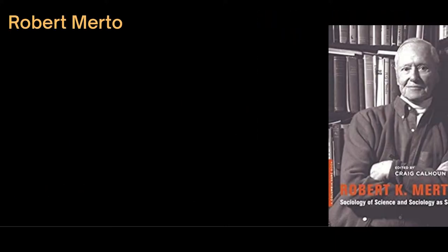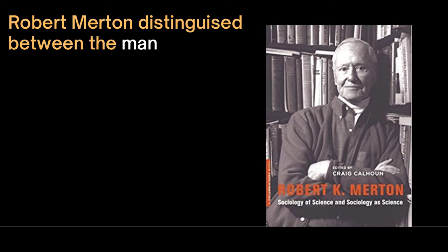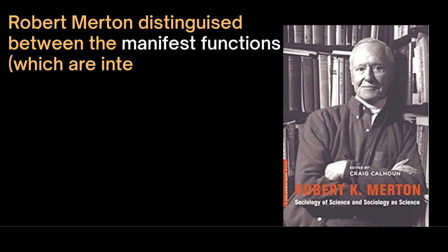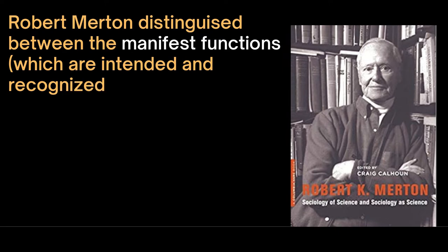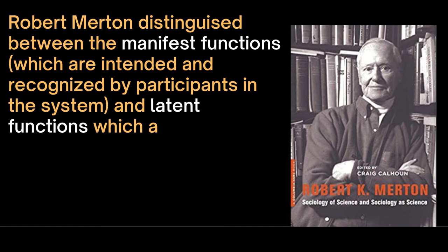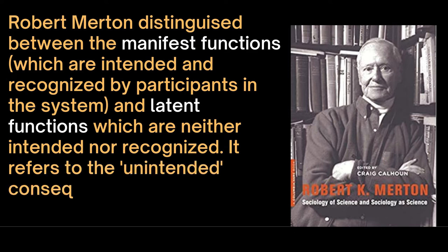Robert Merton distinguished between manifest functions, which are intended and recognized by participants in the system, and latent functions, which are neither intended nor recognized. Latent functions refer to the unintended consequences of various kinds of behavior.